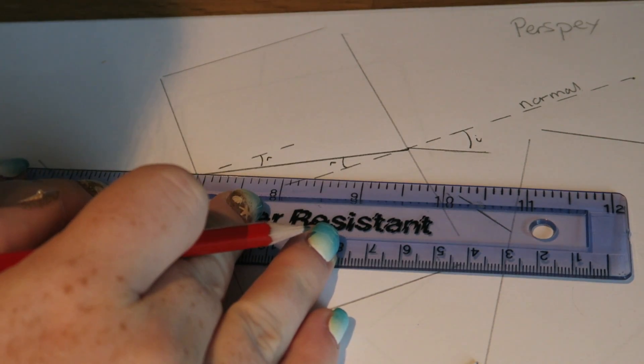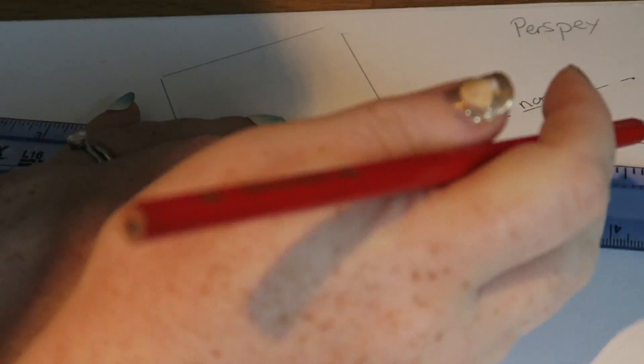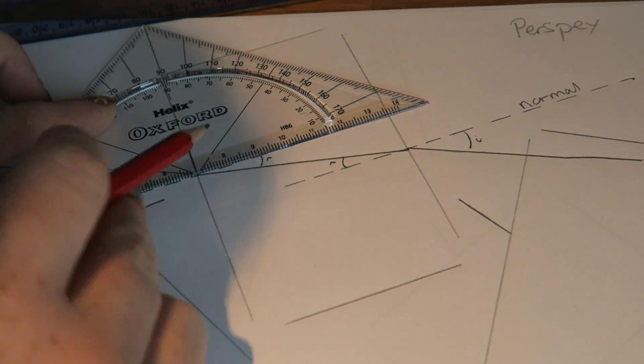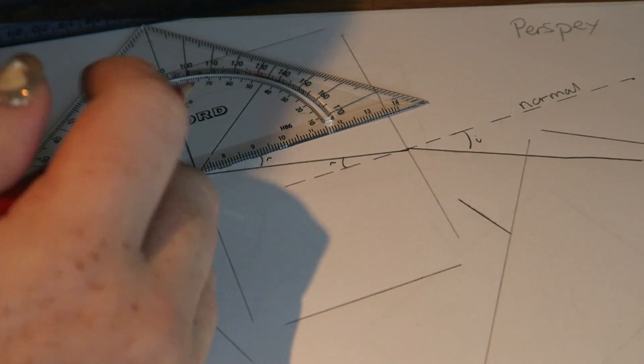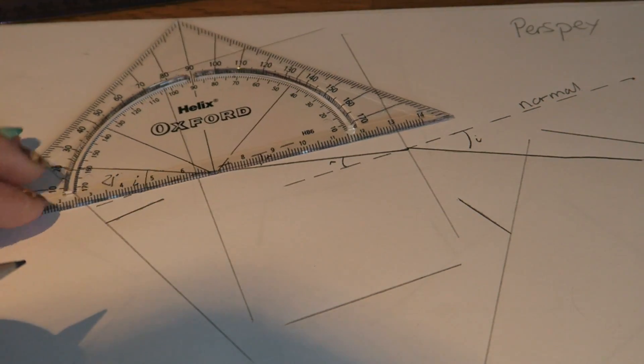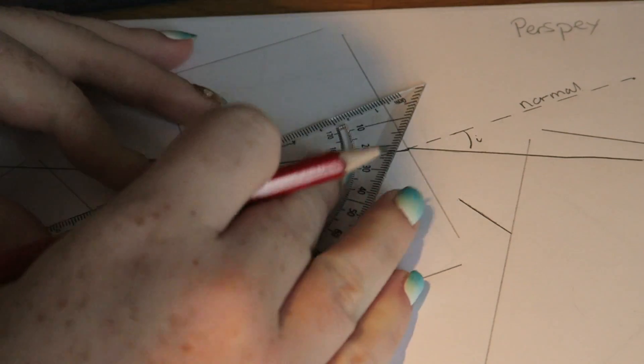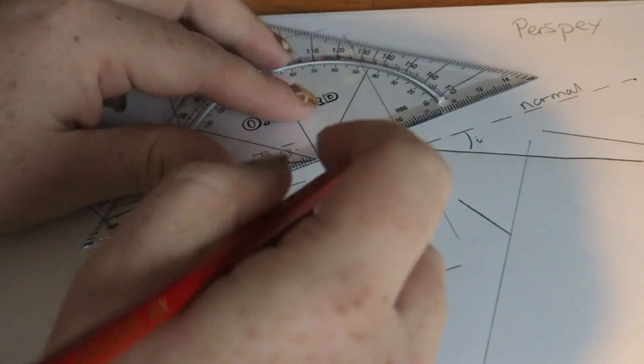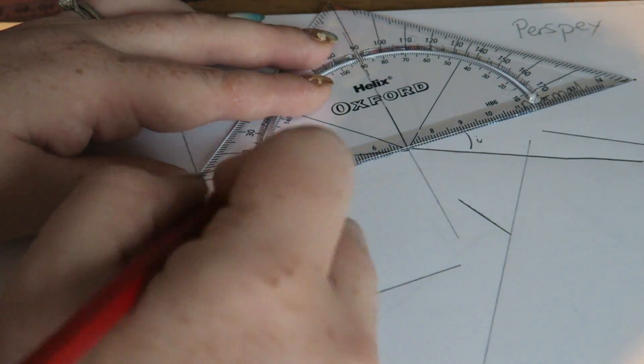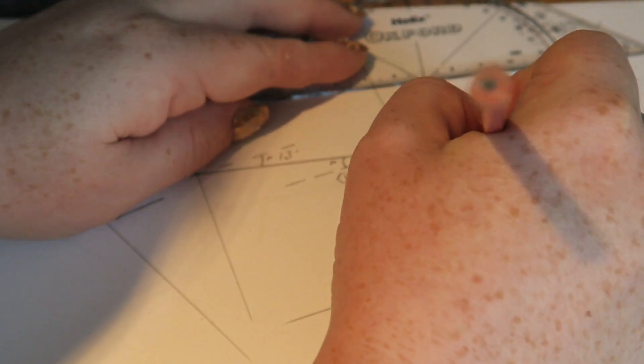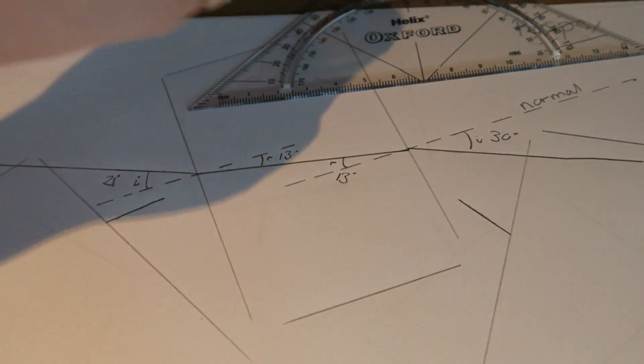Just going to make the lines a bit longer. So, putting the middle of my protractor on the middle of it there. Lining that up, and that is going through 21 degrees. Doing the same on the other side. And 13 degrees there. And that one is 30 degrees. I'll keep going with the rest of these, and then I'll show you the results.